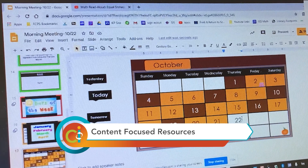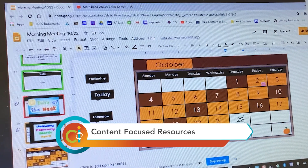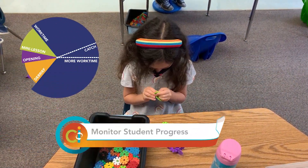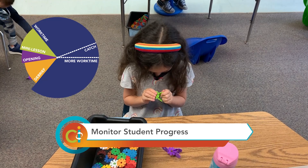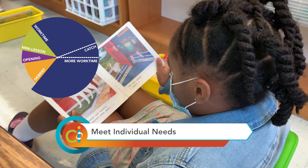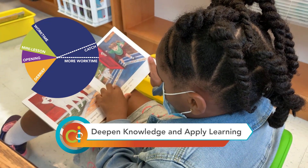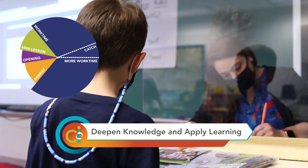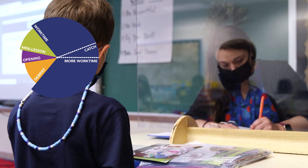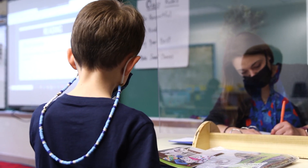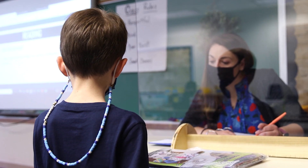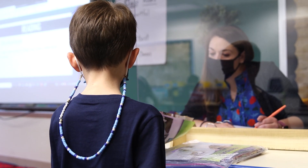These options can be supported through technology or through other materials. Using this kind of workshop model provides the teacher with time to check in and conference, meeting the needs of students individually while others build new knowledge and apply their learning. While you are seeing a face-to-face meeting here, the teacher could also do this with a student at home in a breakout room. This is one way a teacher can meet the individual and group needs of students during concurrent instruction.